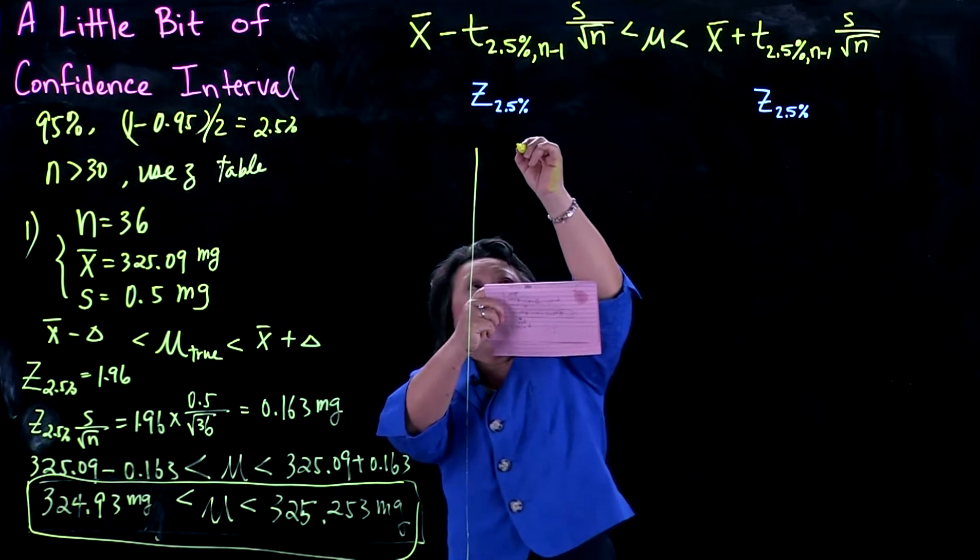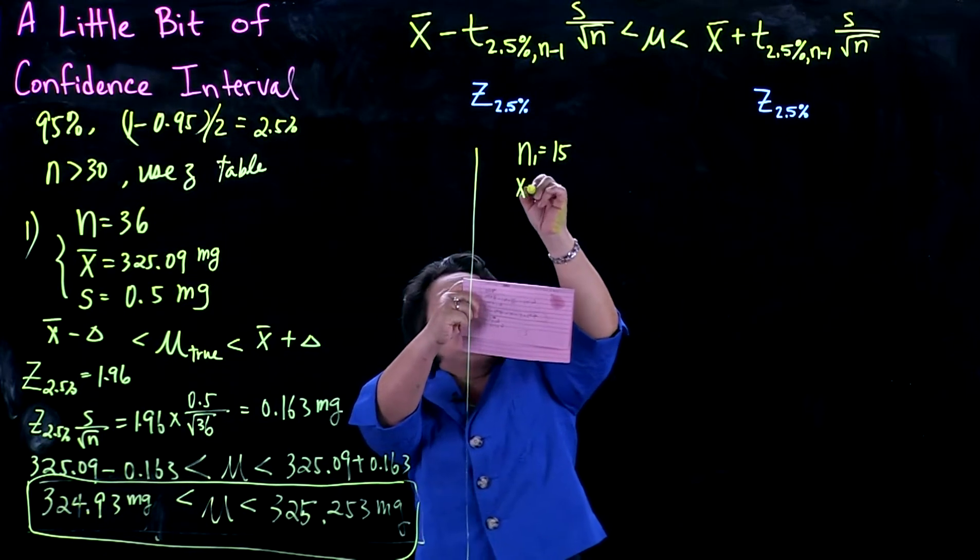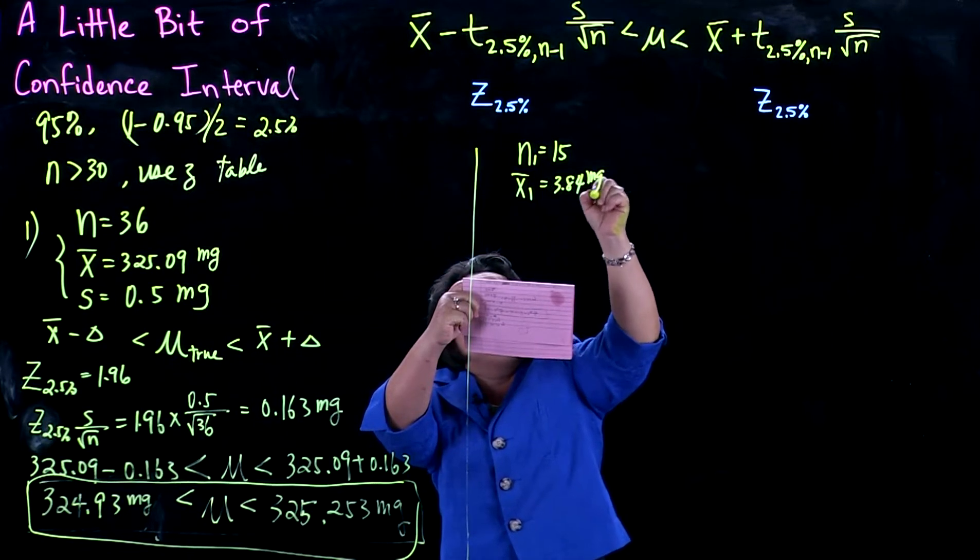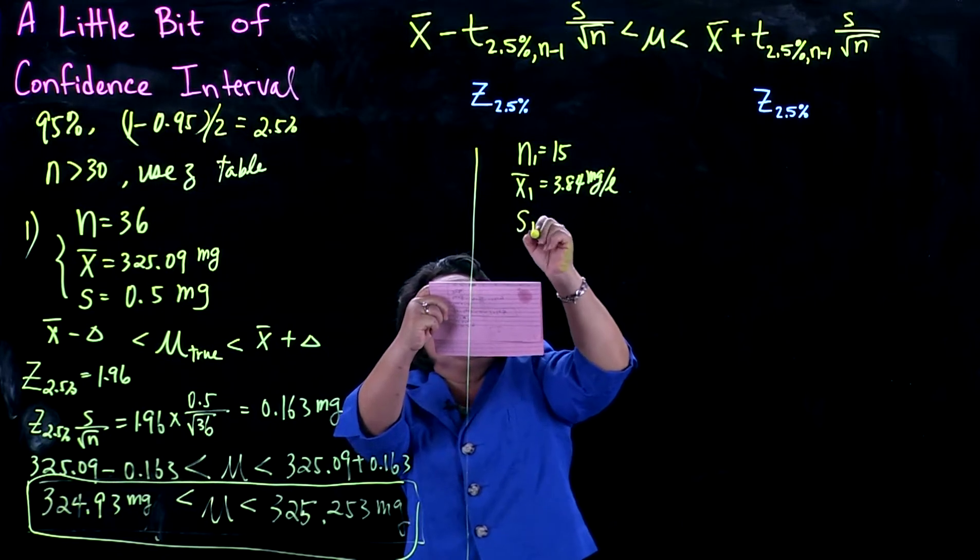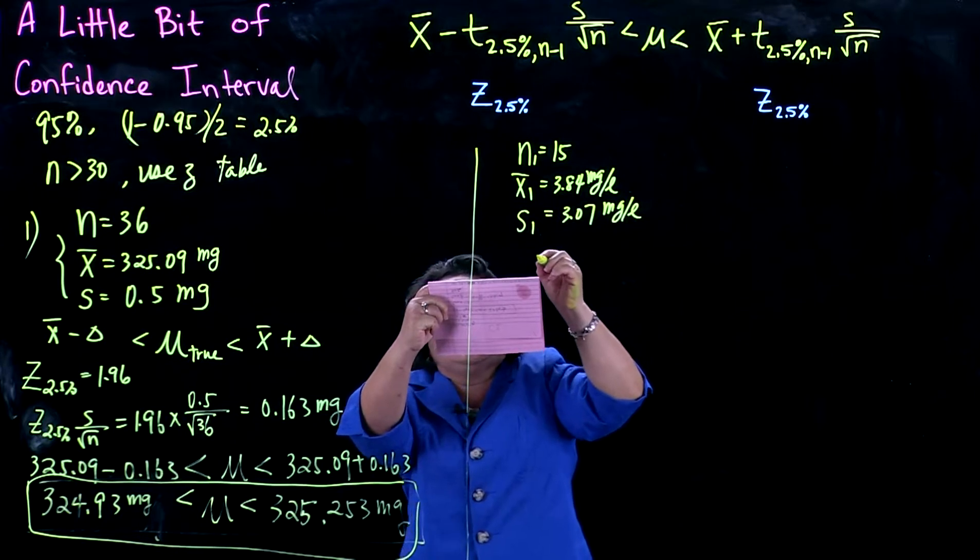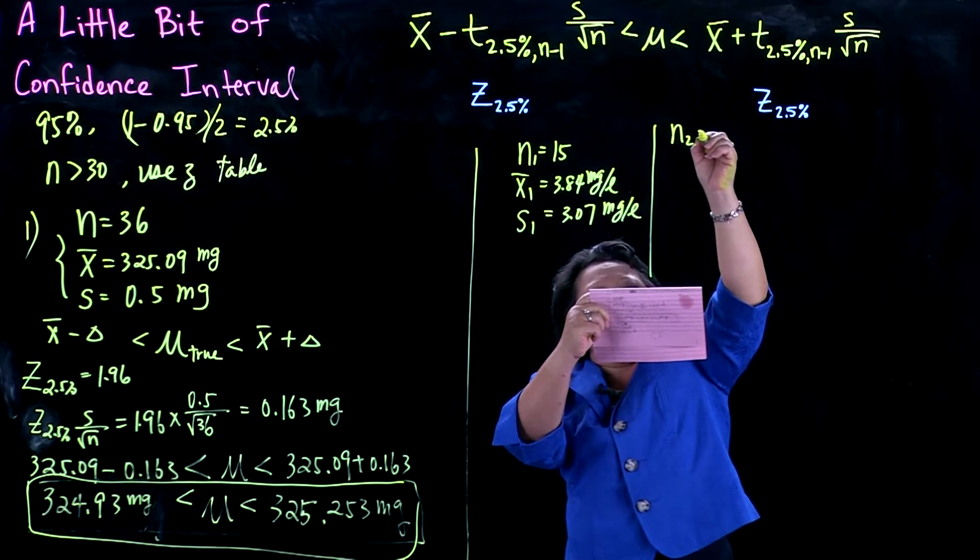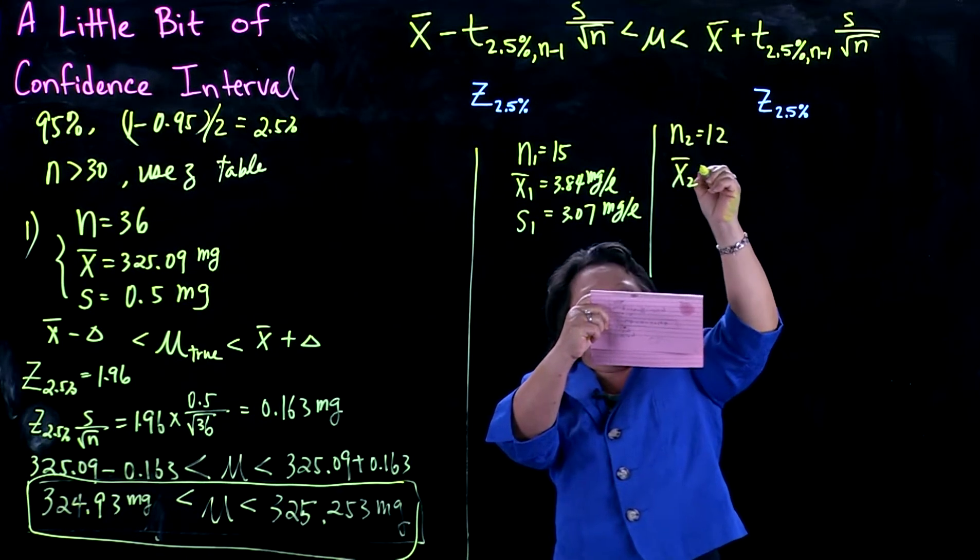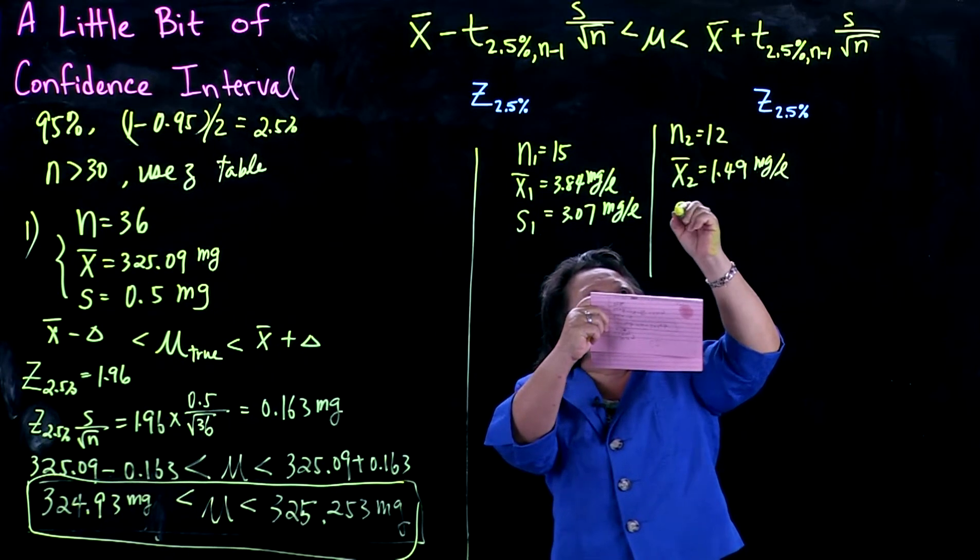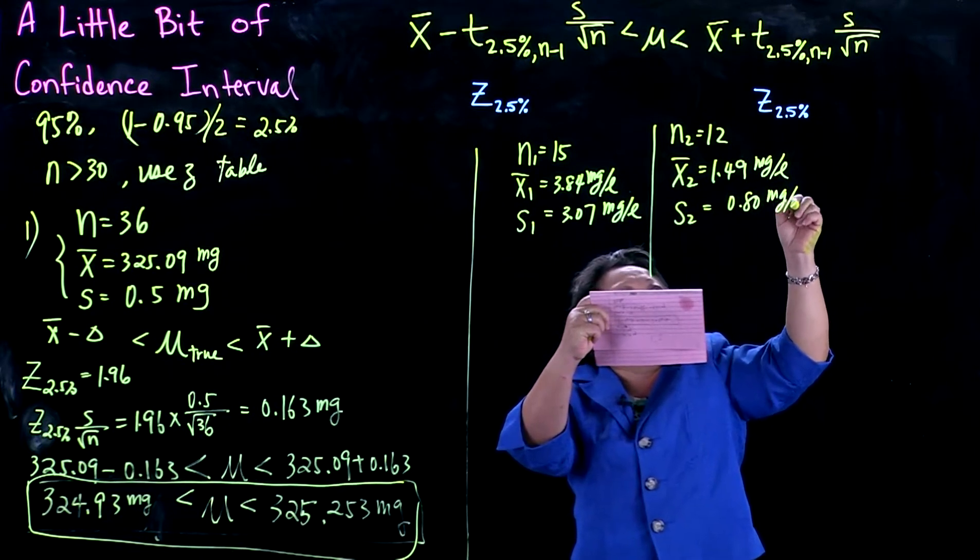Let's do an example of cleanup. Before cleanup, I have samples from 15 different sites of a river and find a contamination level of heavy metal is 3.84 milligrams per liter with standard deviation 3.07. Afterwards, I do sampling again. My x2 afterwards is only 1.49 milligrams per liter with a standard deviation of 0.8.